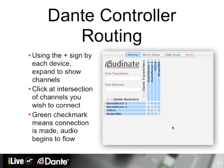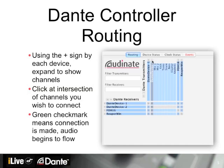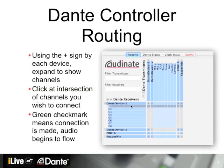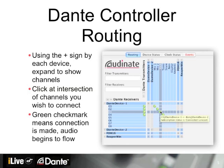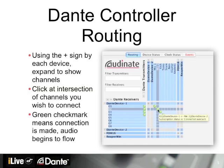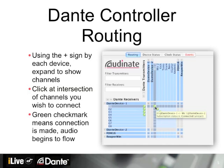Routing signals with Dante is incredibly easy. Click the plus sign by each device to expand and reveal channels for either transmission or receiving. Then locate the intersection of the two channels you wish to connect — there are guides to help you accurately select that — and just click at the intersection to create a connection. A green check mark means the connection is made and audio begins to flow immediately. If you place your mouse over any connection, a tooltip appears showing additional information about that connection.